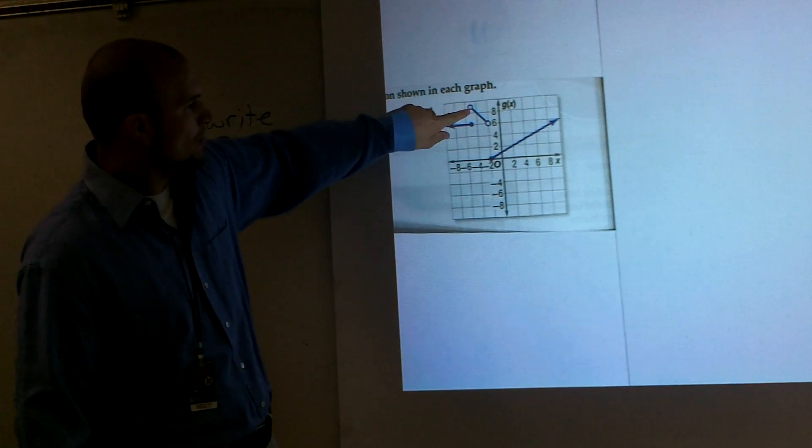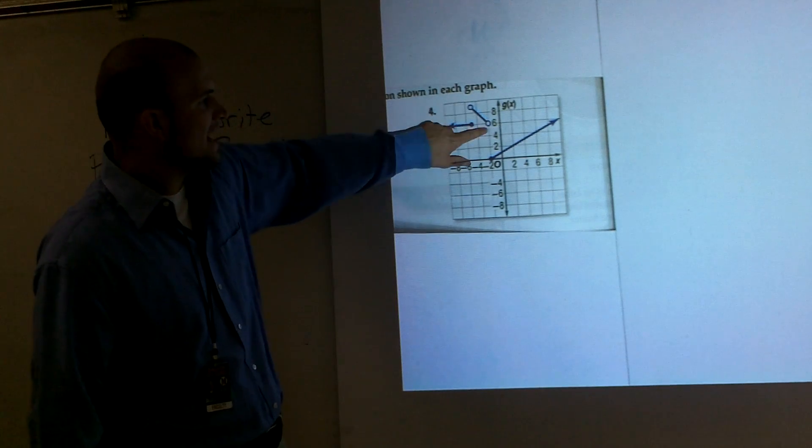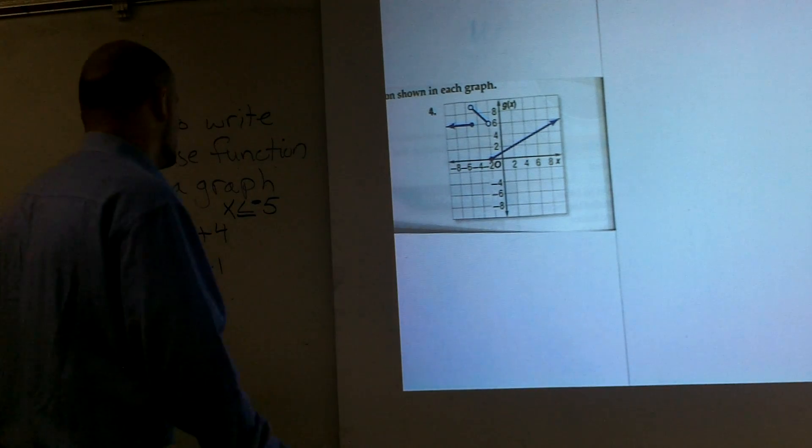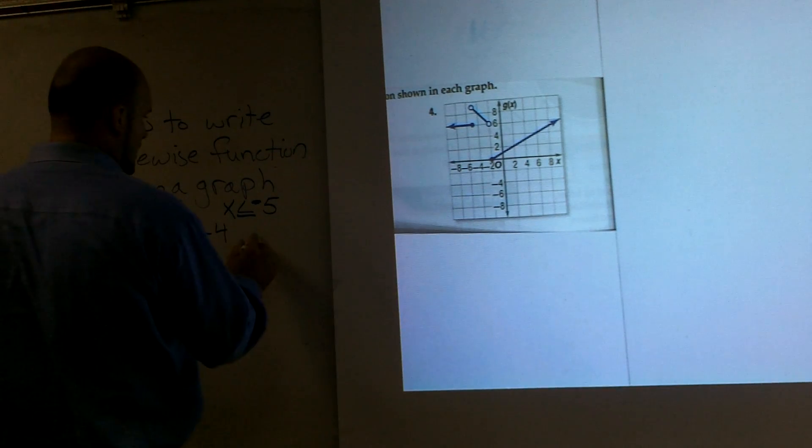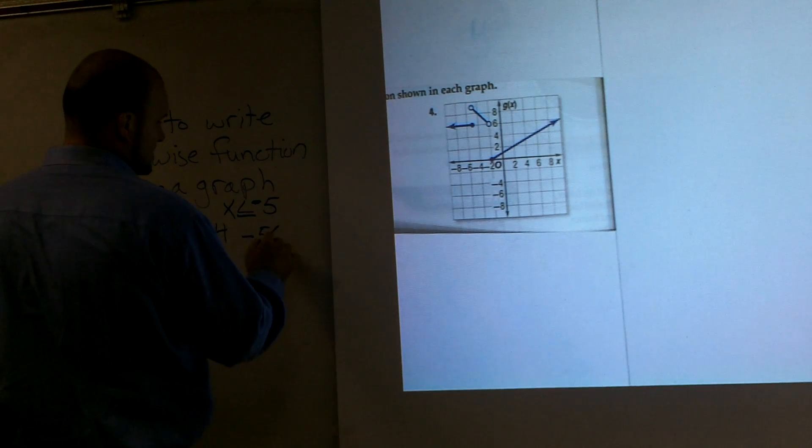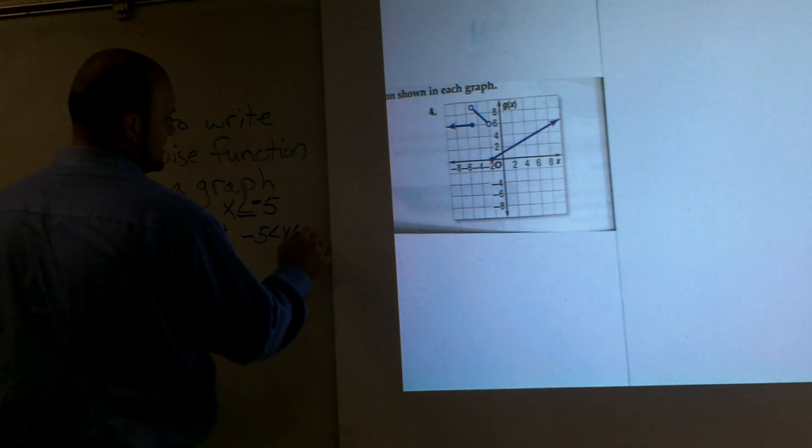Then, this one has an open dot at 5, and it goes from 5 to negative 2. So I'd say this one goes from negative 5, which would be less than x, which would be less than negative 2.